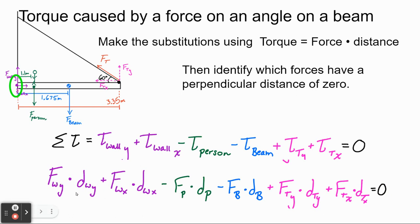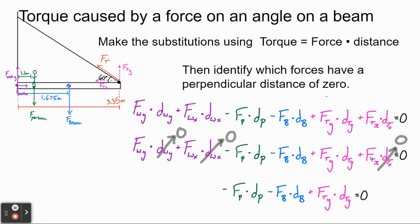For each torque, I use the same subscripts: P for person, B for beam, T for tension. Three of these distances are zero: the wall forces act at the pivot (distance zero from itself), and FTX acts along the same line as the beam direction, so it's parallel to the moment arm — giving zero torque. That leaves me with a simplified equation involving only the person's force, the beam's weight, and FTY.